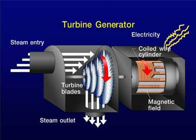Rotor. The synchronous generator consists of a rotor and the stator. The rotor is the rotating part of the generator. It is typically connected to a prime mover, such as a steam turbine or a diesel engine, which provides the mechanical energy required to turn the rotor.